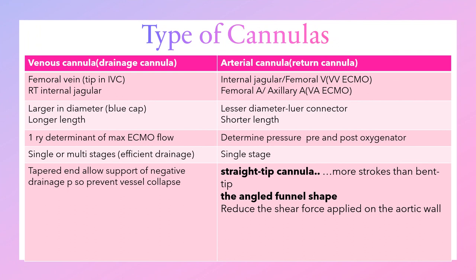ECMO circuits have two types of cannulas. The first is the venous cannula, or drainage cannula, which is usually inserted on the venous side regardless of the type of ECMO — veno-venous or veno-arterial. It is inserted in the femoral vein or right internal jugular vein. These cannulas are larger in diameter and longer in length, and they determine the maximum ECMO flow. They can be single-stage or multi-stage, meaning they have multiple pores for efficient drainage, and their ends are tapered to support negative drainage pressure and prevent vessel collapse.